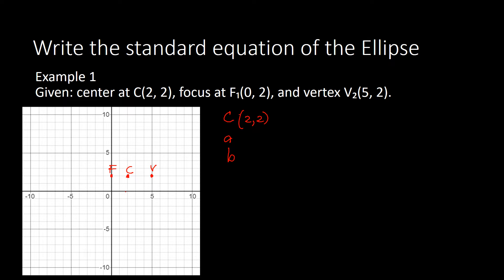Now our A is the distance from our center going to our vertex. If we count the number of units from center to vertex, we have 1, 2, 3 — so we've got 3 as our A value. But from center to our focus we have 1, 2 — so we've got 2 units, and that is not our B, that is our C. Our C is 2.